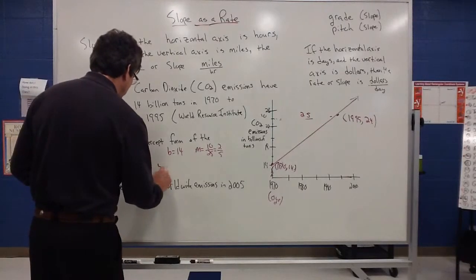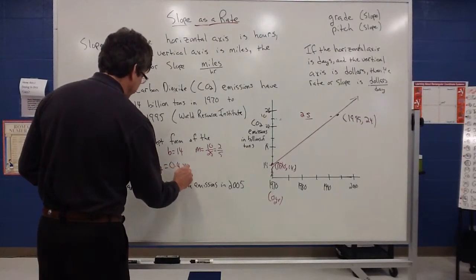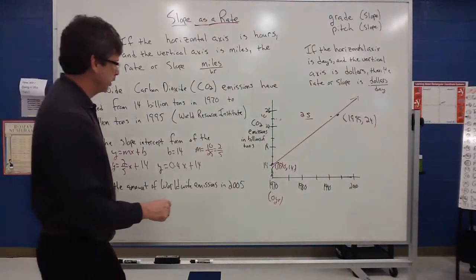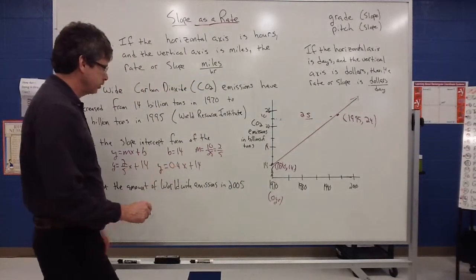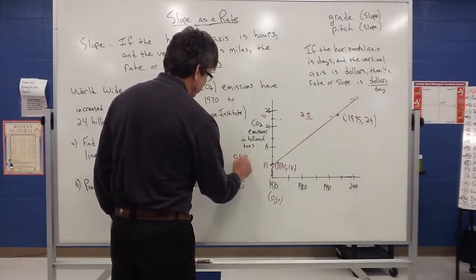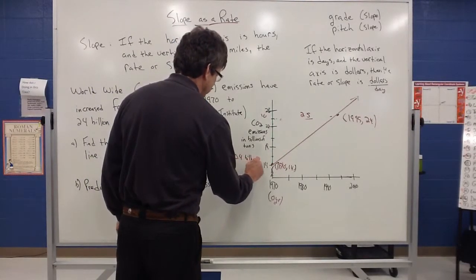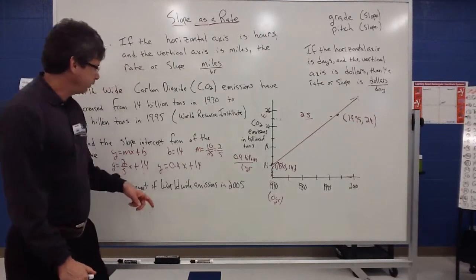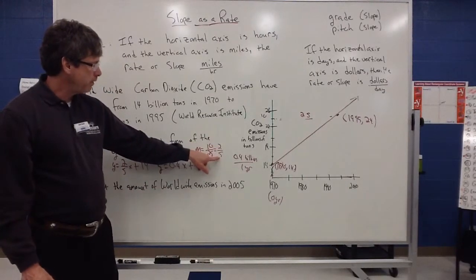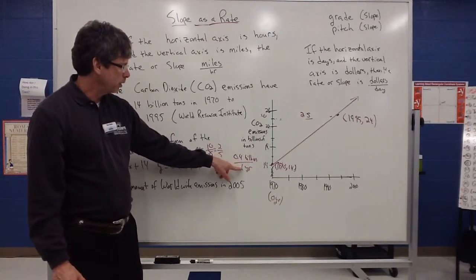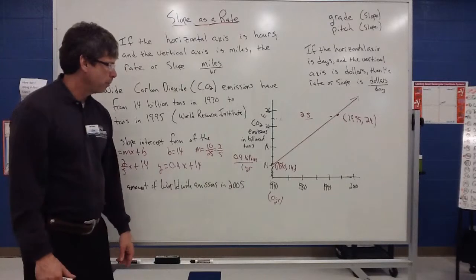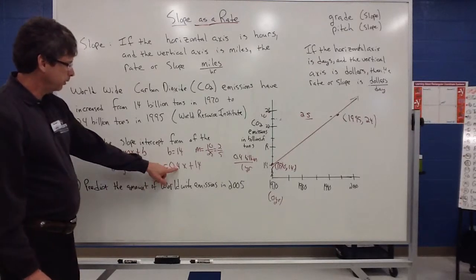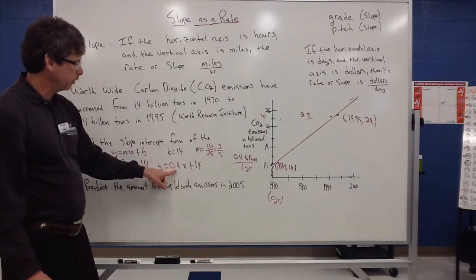y2 minus y1, 24 minus 14 would have gave me my 10. And 1995 minus 1970 would have gave me my 25. That would have gave me my change that way. So there's my equation. Now we also could look at this as y equals 0.4x plus 14. In other words, I could change that 2 fifths to a decimal and change it to 0.4. And what that could mean is 0.4 billion per one year. What I could do is show that as a unit rate. So what I pick up on is instead of saying 2 billion every 5 years, I could change that to a unit rate that says 0.4 billion per year.